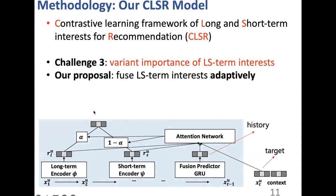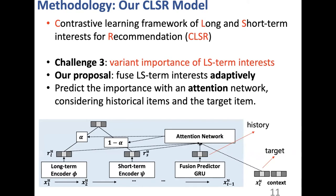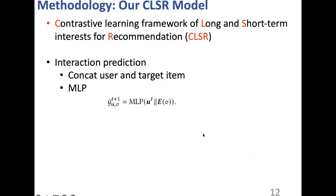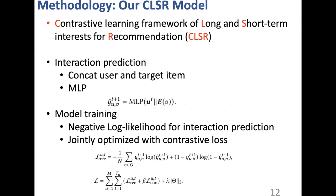To overcome the third challenge of varying importance of long- and short-term interest, we propose adaptive fusion. We design an attention network which takes the long-term representation, short-term representation, interaction history, and target item as input to predict the importance of each interest type. We then concatenate the user and target item representations and use an MLP to predict the interaction probability. For model training, we utilize a negative log-likelihood loss for interaction prediction, jointly optimized with the contrastive loss.